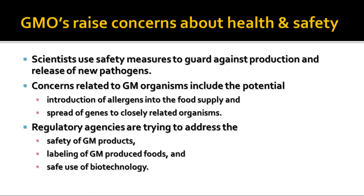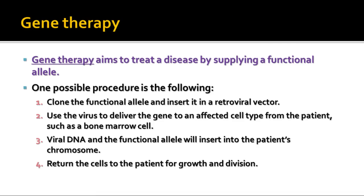This is one of the controversial topics in biotechnology. Another very helpful biotechnology process is gene therapy, which aims to treat disease by supplying a functional allele for a gene that's not working properly. One possible procedure is to clone that functional allele, insert it into a retrovirus vector, and then use the virus to deliver the gene to cells grown in culture from the particular patient.